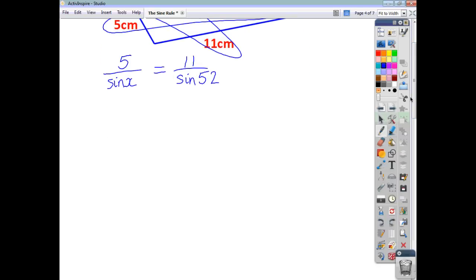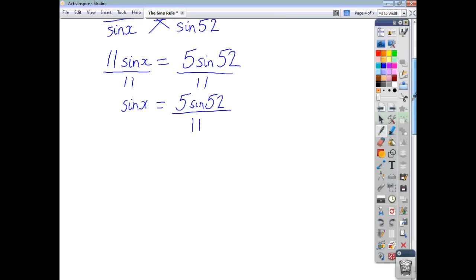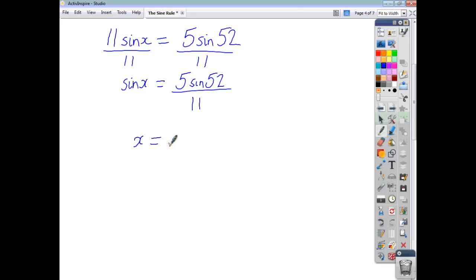We can then use cross multiplication and say, 11 sine x is going to be equal to 5 sine 52. We divide both sides by 11. We find that sine x is equal to 5 sine 52 over 11. And then to get x on its own, you have to do inverse sine. And when you do that, an inverse sine, all of this, you end up with an answer of 21 degrees.